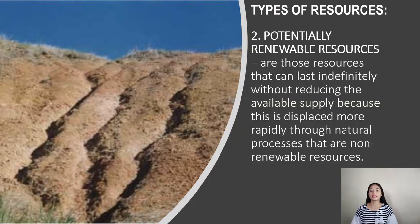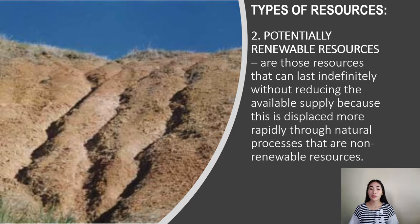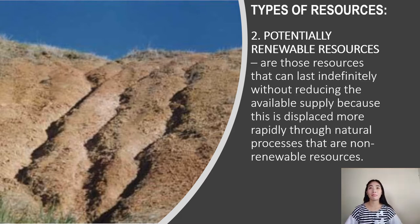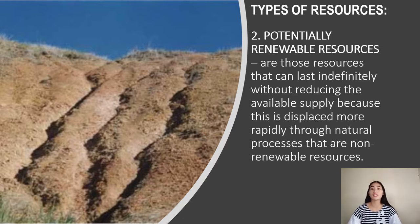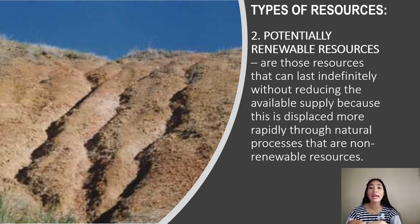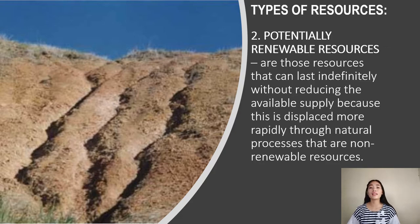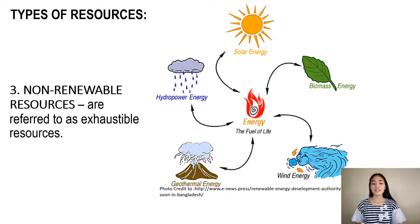The next type is potentially renewable resources — those that can last indefinitely without reducing available supply because they are replenished more rapidly through natural processes than non-renewable resources. These can be replenished fairly rapidly, from hours to several decades. Examples include forest trees, grassland grasses, wild animals, fresh lake and ocean water, groundwater, fresh air, and fertile soil.